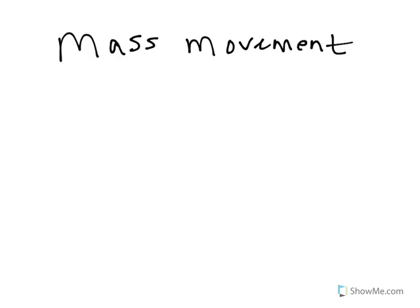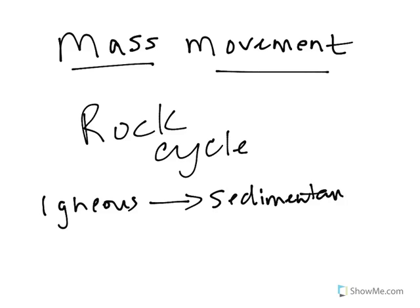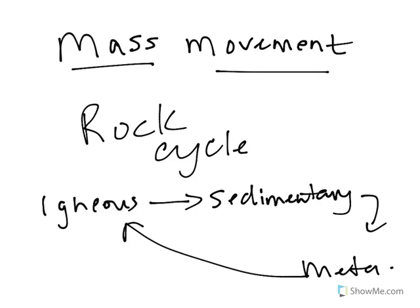I want to take a moment to reiterate that mass movements are really crucial to the rock cycle. As we've learned, there are three rock types: igneous, which are formed from volcanic processes. That igneous can be brought up to the surface, and it may be eroded to make sedimentary. Through burial, you might be able to make metamorphic, and if we continue to bury it and heat it, it's going to remake igneous.